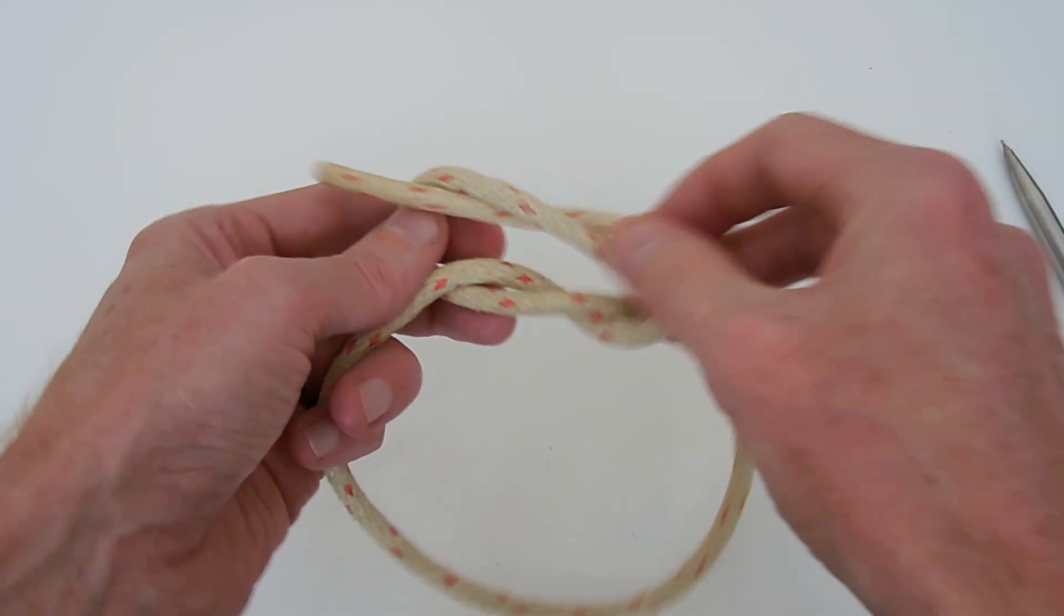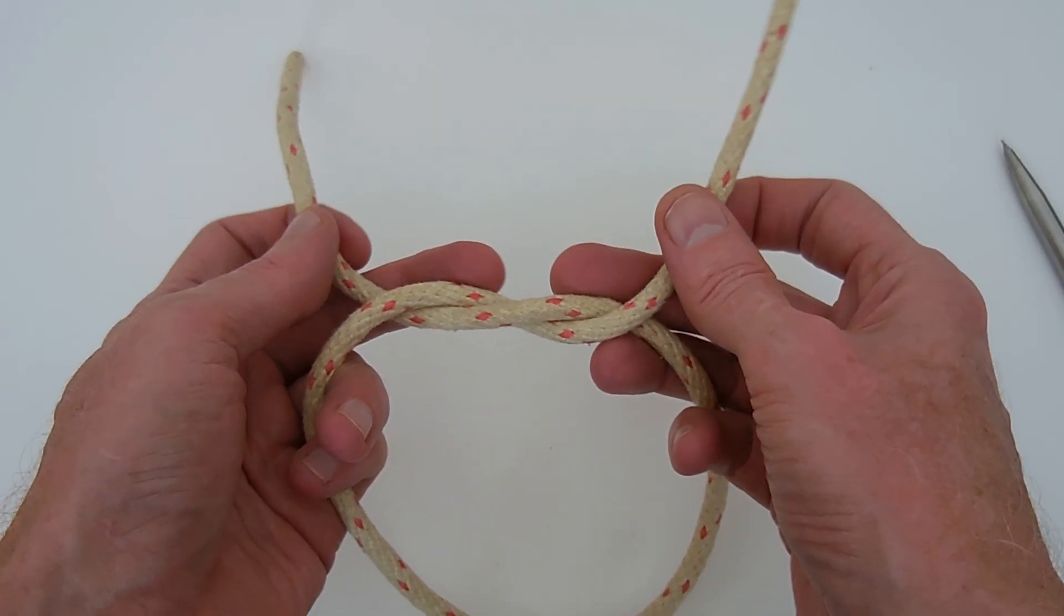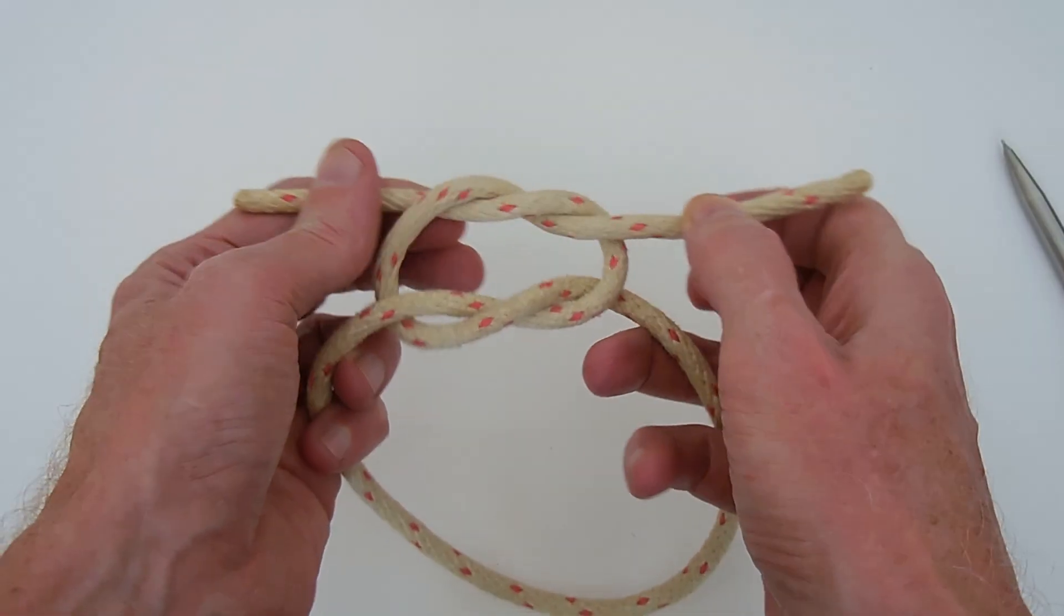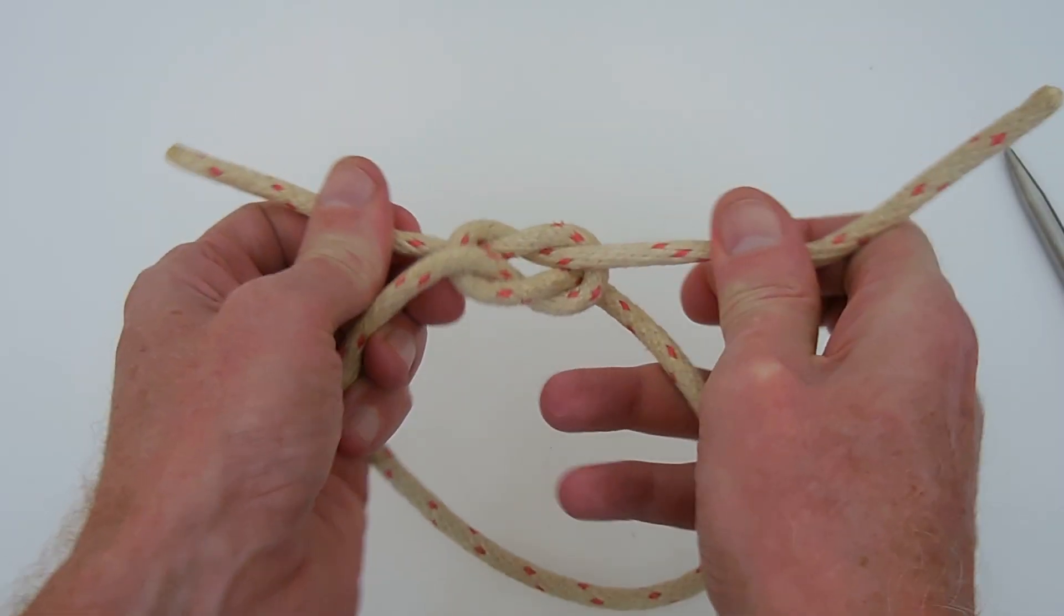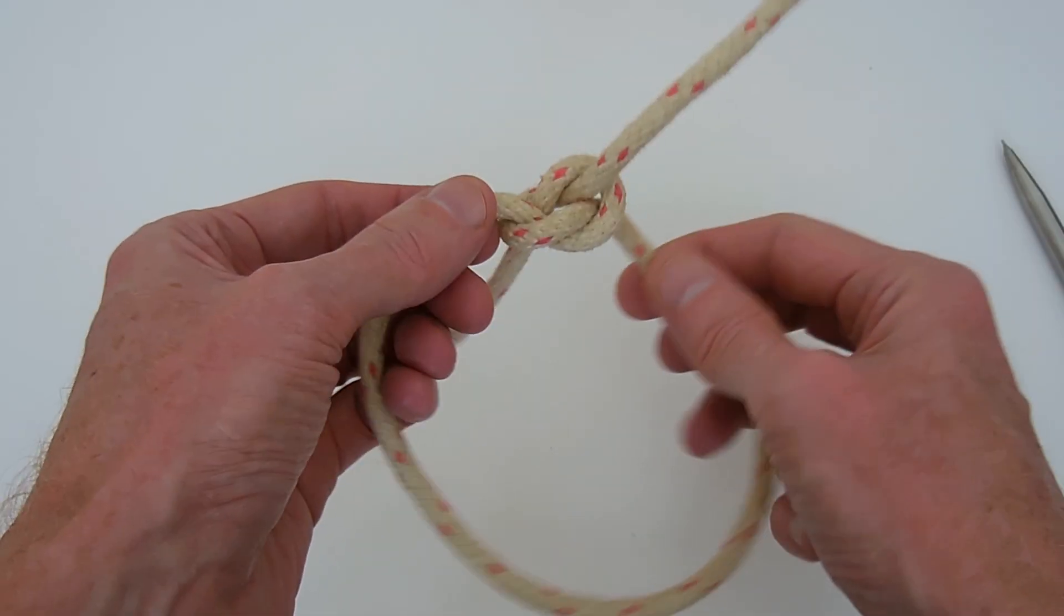Now on the other hand, when we tie a granny knot, which is here I've got a left over right starting knot followed by a left over right finishing knot, first thing you'll notice is that it really doesn't form a nice neat knot.